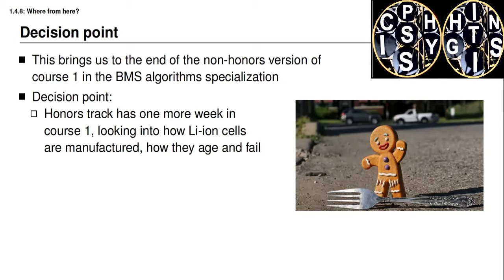At this point you get to make a decision. As the diagram shows, you are at a fork in the road. You might decide simply to continue with the non-honors version of the specialization. However, if you're interested in the honors version of the certificate and battery management system algorithms, there's one additional week of lessons in this course. The honors track has a week five that discusses how lithium-ion cells are manufactured and talks in a bit more detail on how they age and how they fail.